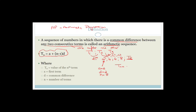TN equals 2 plus (5 minus 1) times 2, which is 2 plus 4 times 2. Four times two is eight, so it's 2 plus 8 which equals 10. And we know that's 10 because it's going 2, 4, 6, 8, 10. It's a silly example, but it shows how we can use this formula to find the Nth term.